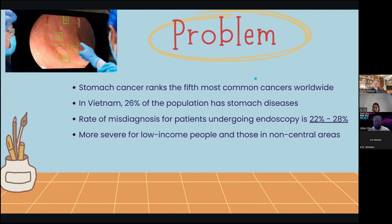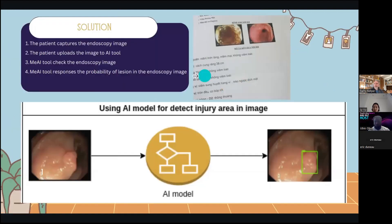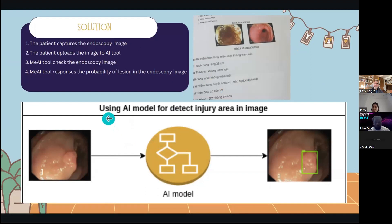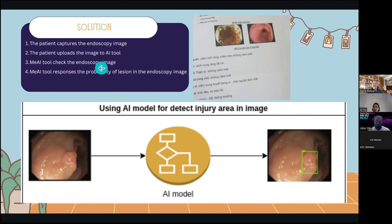To solve this problem, we propose a solution: in this service, we use an AI model to detect the lesion area in endoscopy images. The patient can capture their endoscopy image and upload it to our AI tool — MiAITune, which stands for Medical AI Tune. MiAITune can check the endoscopy image and respond with the probability of lesions in the image.